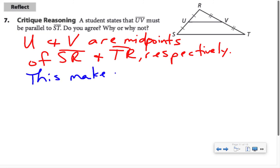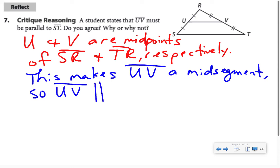This makes UV a midsegment, and a few modules ago, we learned that a property of a midsegment is that it will be parallel to the third side. The name of the property was the triangle midsegment theorem.